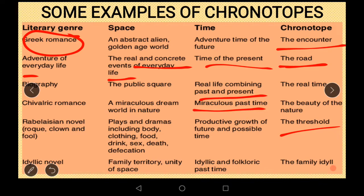Let me give one more example. Mulk Raj Anand, the famous Indian writer, when he wrote his short novella 'The Village,' tried to create a village — a real-seeming time and place. Similarly, R.K. Narayan's 'Malgudi Days' tries to create a place that exists really, so it is not purely fictional. This is a kind of chronotope we find in many later works.